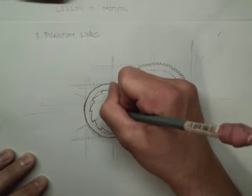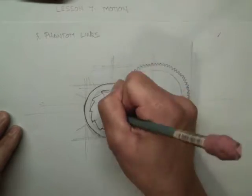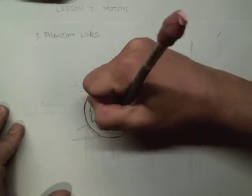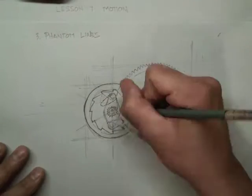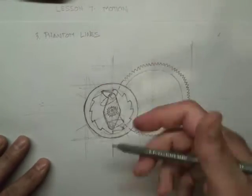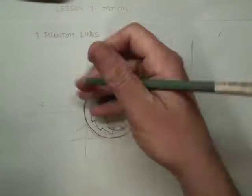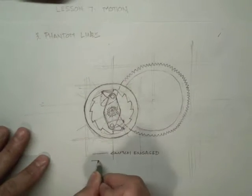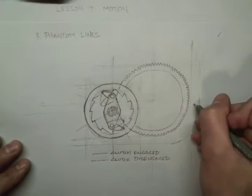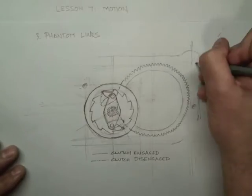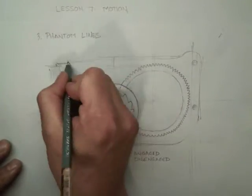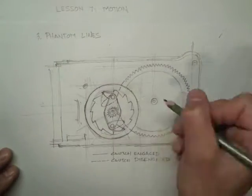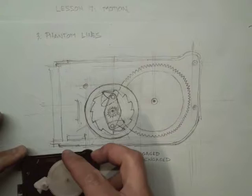Phantom lines show things that are not visible but are nonetheless part of the mechanism we are designing. Use the same two key positions you worked out when drawing the frames, and try to make the functioning of the device as clear as possible through your choice of those two positions. You will very rarely want to illustrate more than two positions, because the drawing can get muddy and confusing quickly with multiple phantom lines. When drawing phantom lines, draw only the outline of the object — not its details — so the drawing doesn't get too confusing. We're really just showing the object in a different position without indicating all its features.